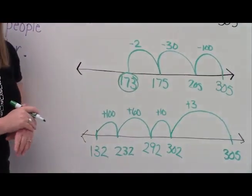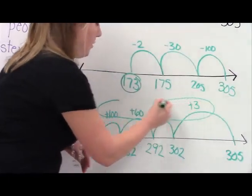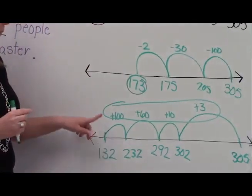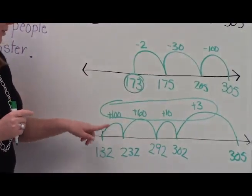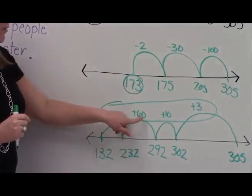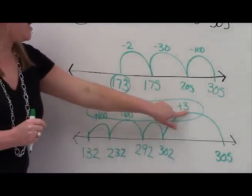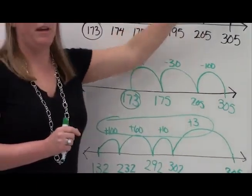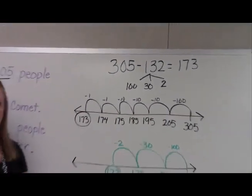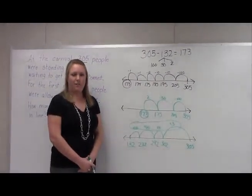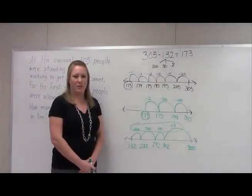So now the answer here is actually how many jumps it took us. And we need to add all of this together, which we have 100 plus 60 plus 10, which gives us 170 and 3, the same answer that we got before. And that's how students are using open number line in order to solve three-digit subtraction equations.